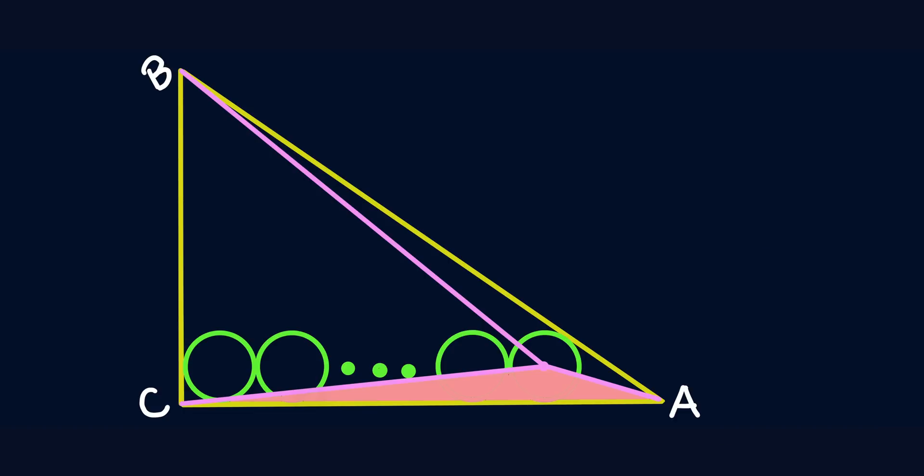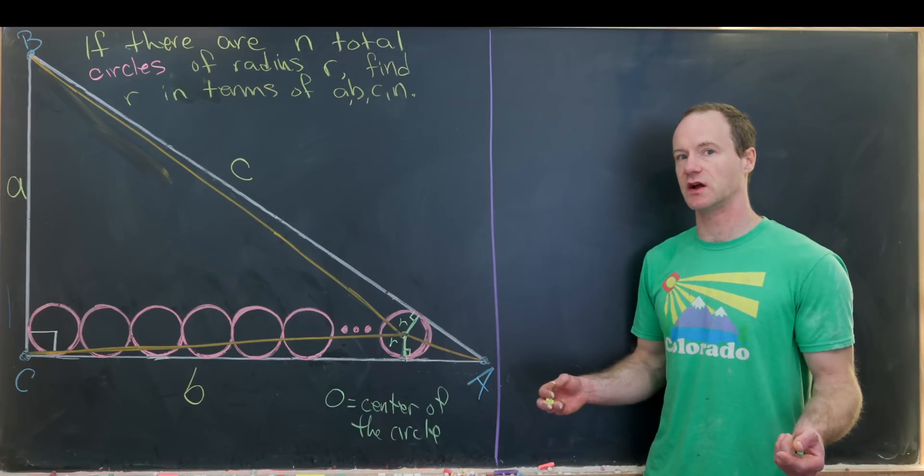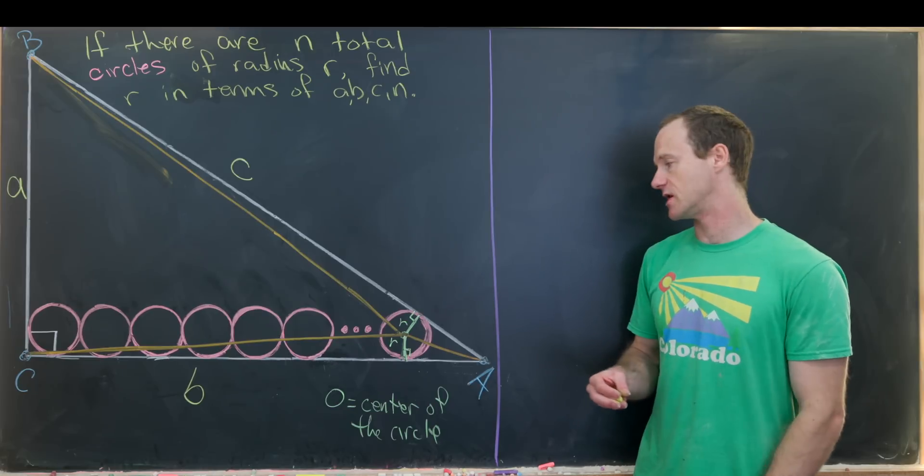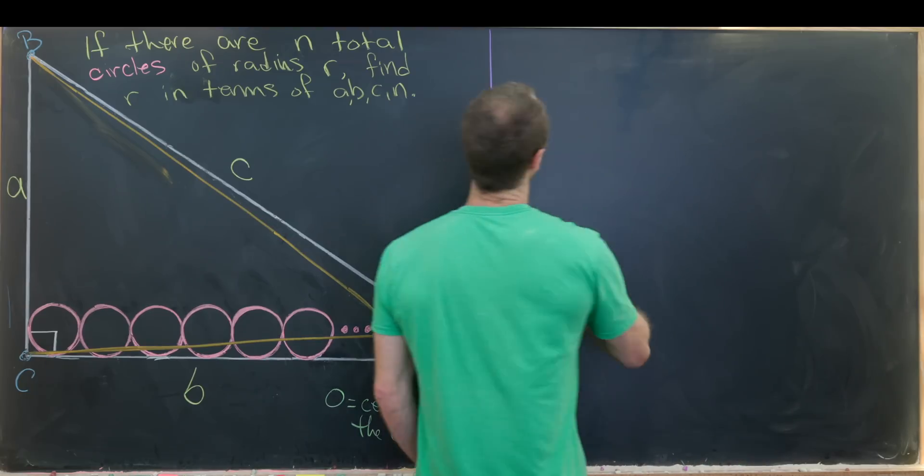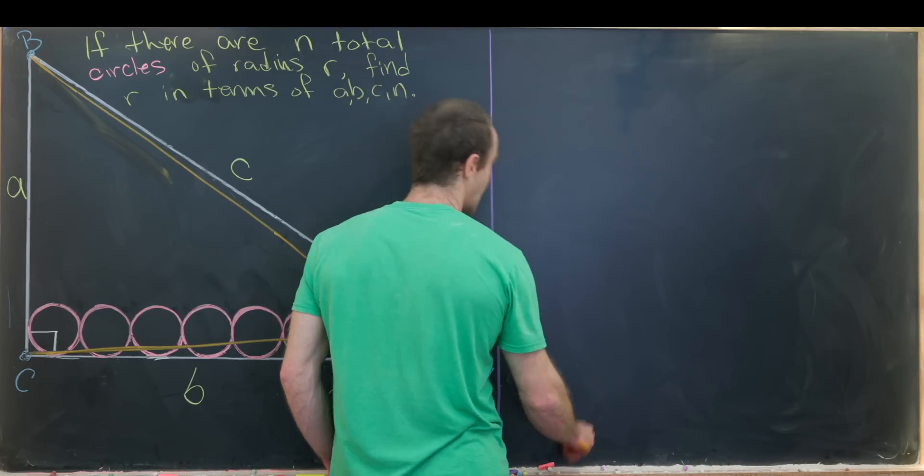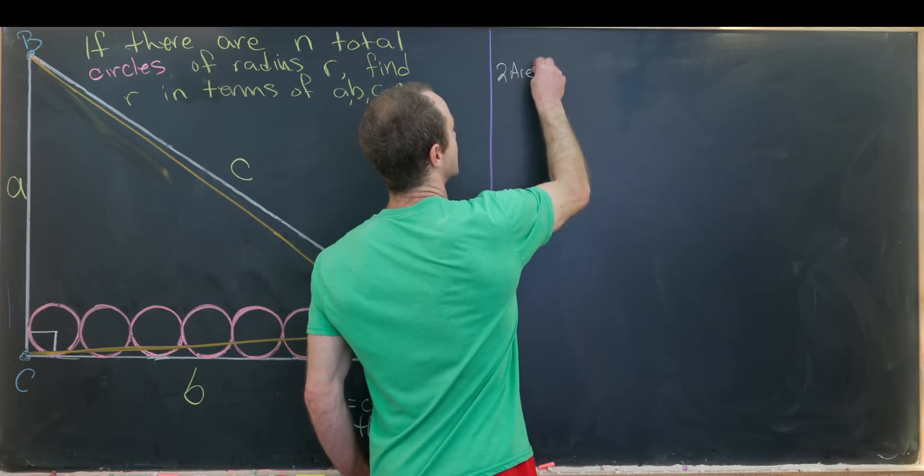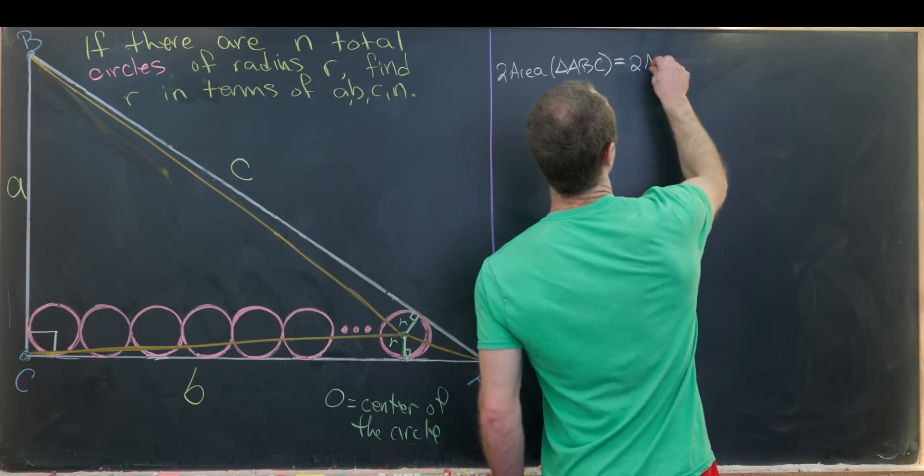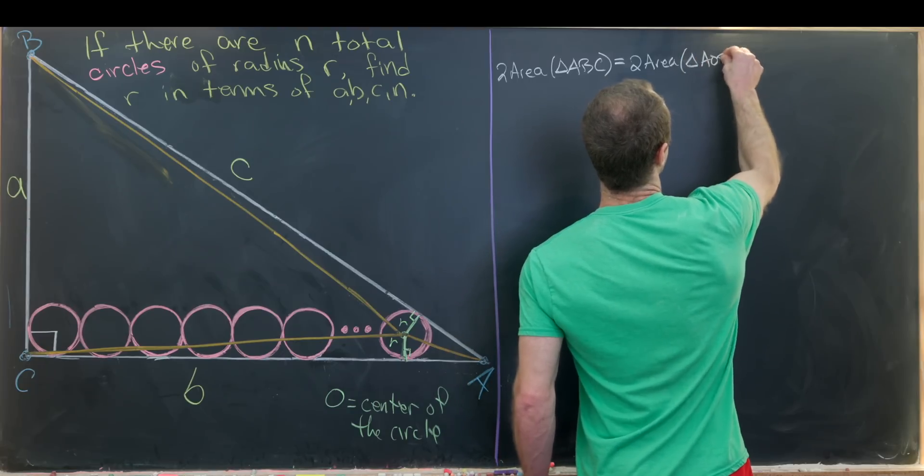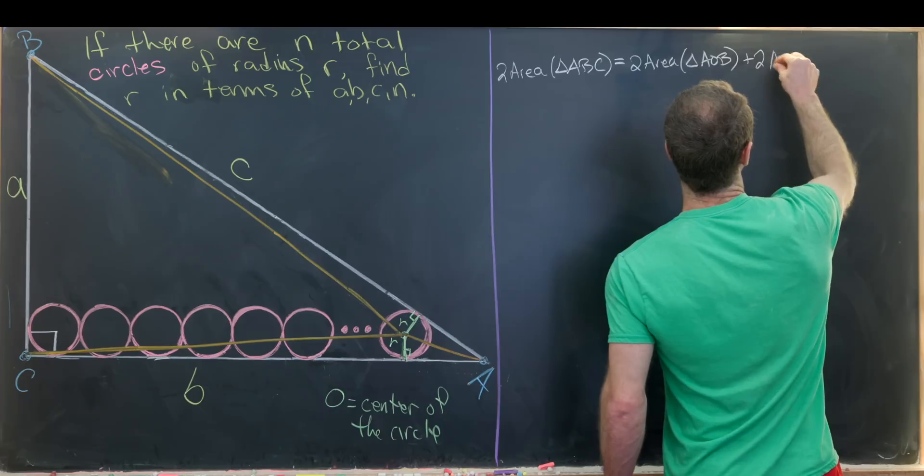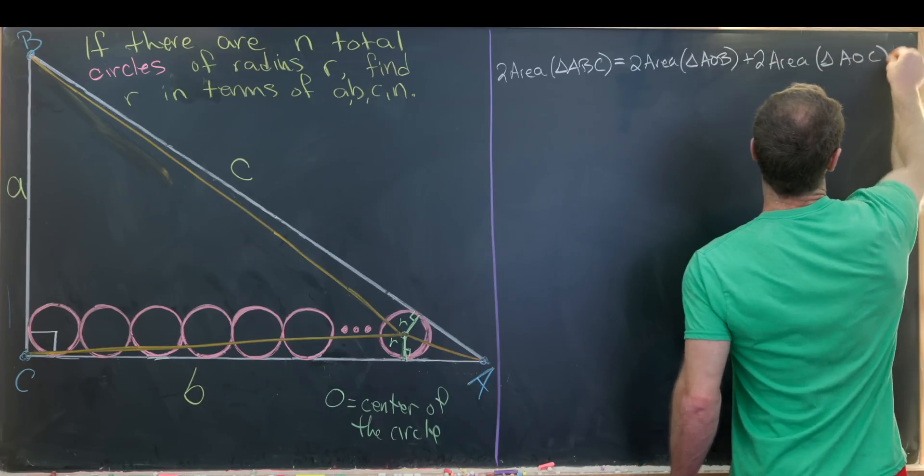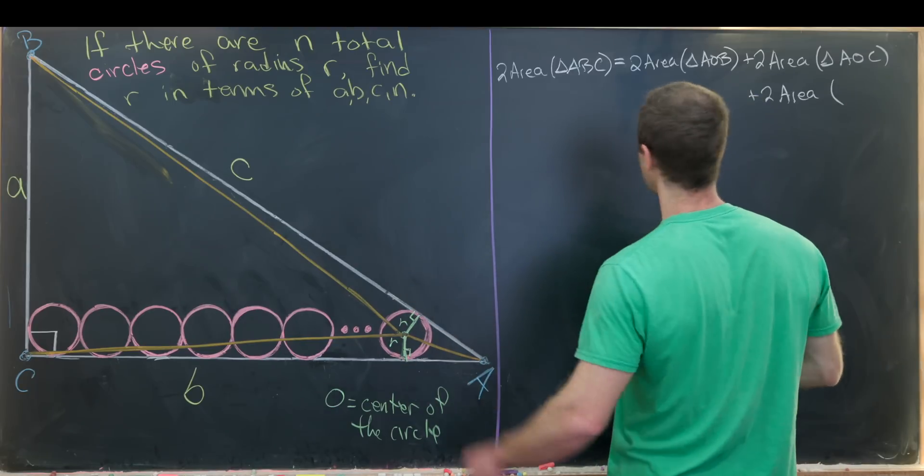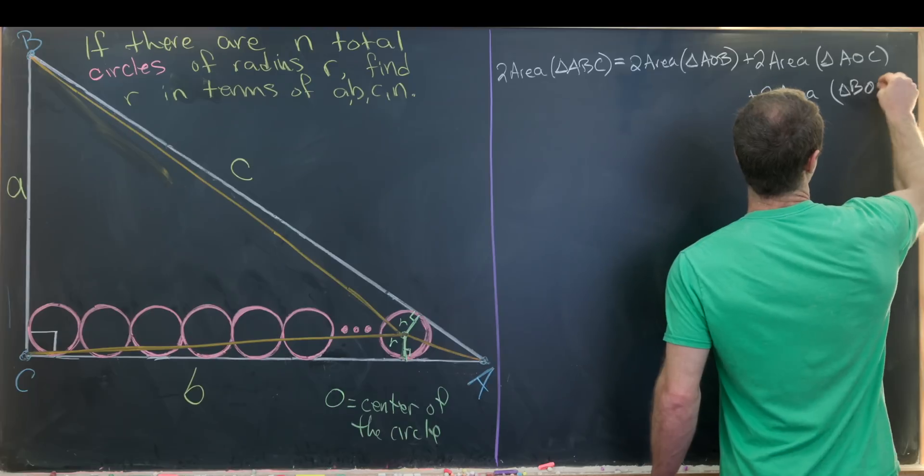Now since we've split our big triangle up into those three triangles, the area of the large triangle will be equal to the sum of the area of the small triangles. But I'm actually going to use twice the area here to clear the denominator. So we have two times the area of triangle ABC equals two times the area of triangle AOB plus two times the area of AOC plus two times the area of BOC.